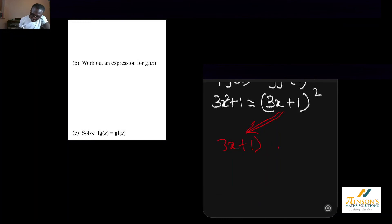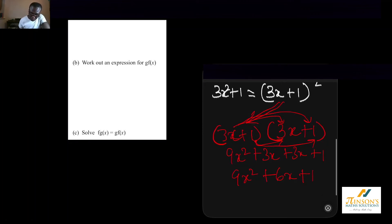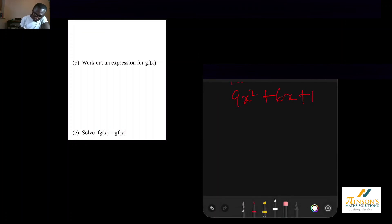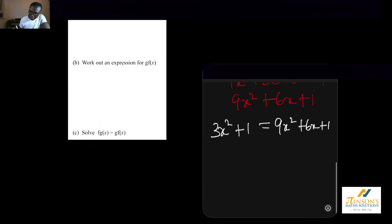3x add 1 squared means 3x add 1 times 3x add 1. So I'm going to expand the bracket and that gives me 9x squared. I'm multiplying 3x by 3x. Then 3x by 1 gives me 3x. Then 1 by 3x gives me 3x. And then 1 times by 1 is 1. This is what many of you call the FOIL method. This will give me 9x squared add 6x add 1.